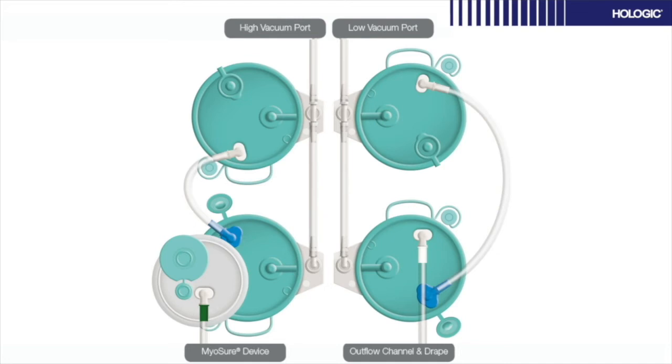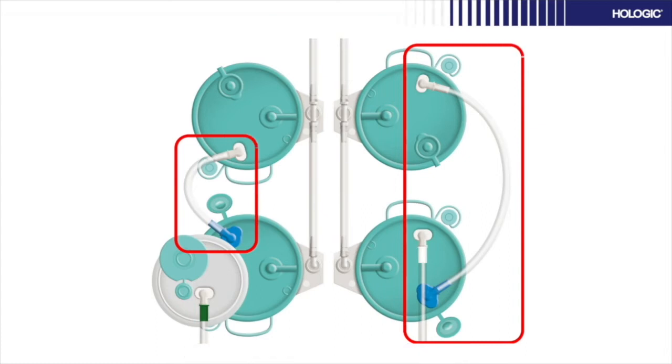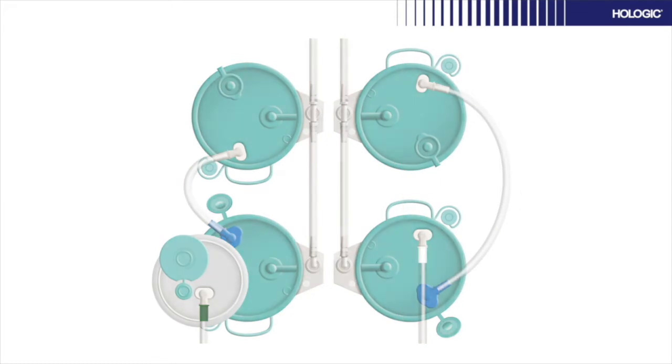Also note that for the majority of procedures, you will only need to replace three items: the front canisters and the tissue trap. You only need to replace the tandem tubing if they are used and the fluid cascades into the back canisters.